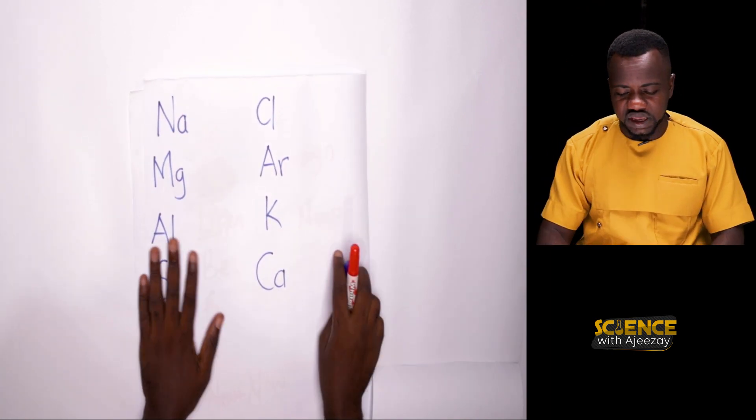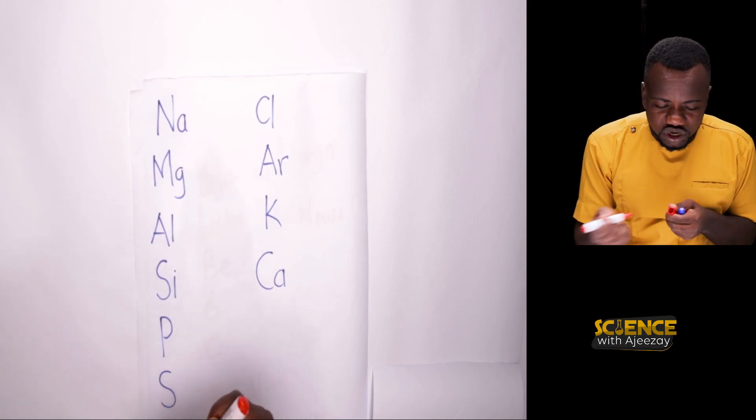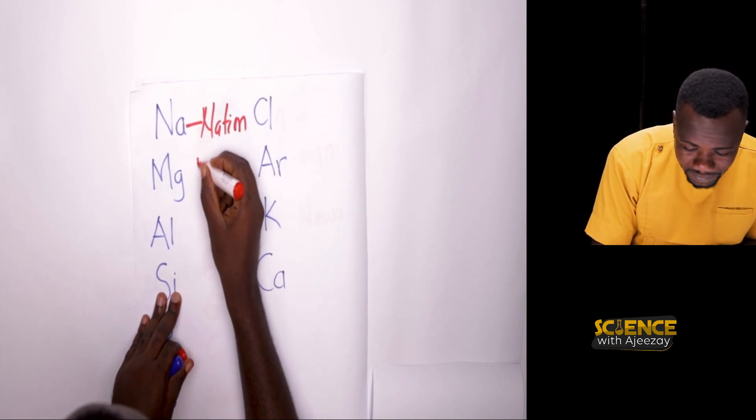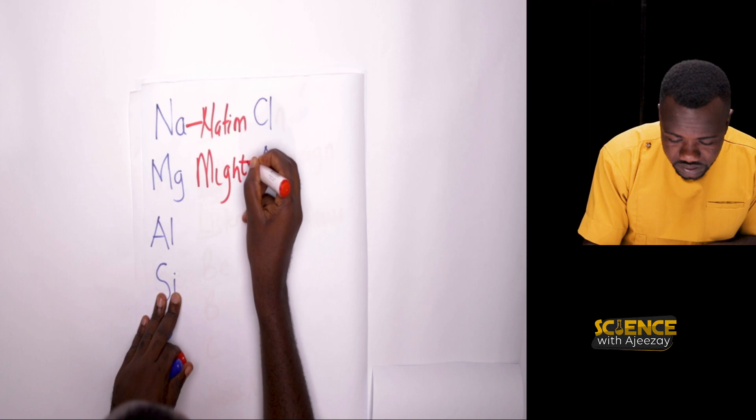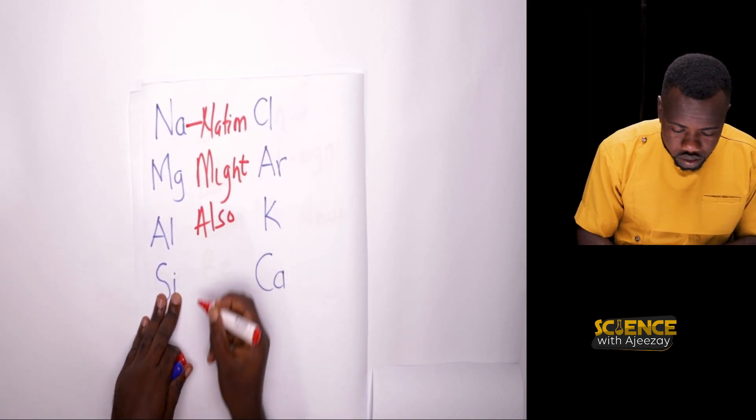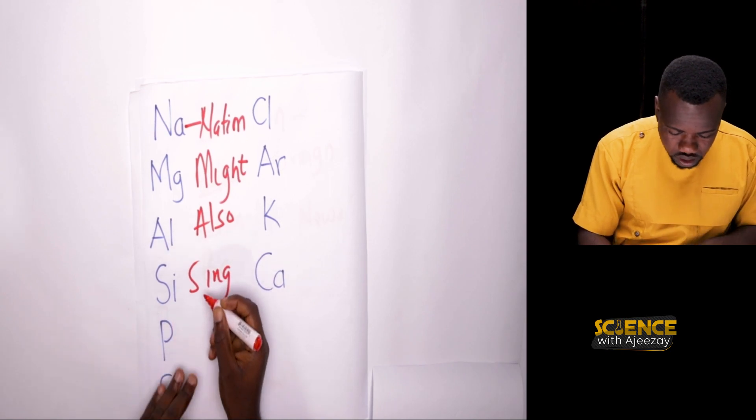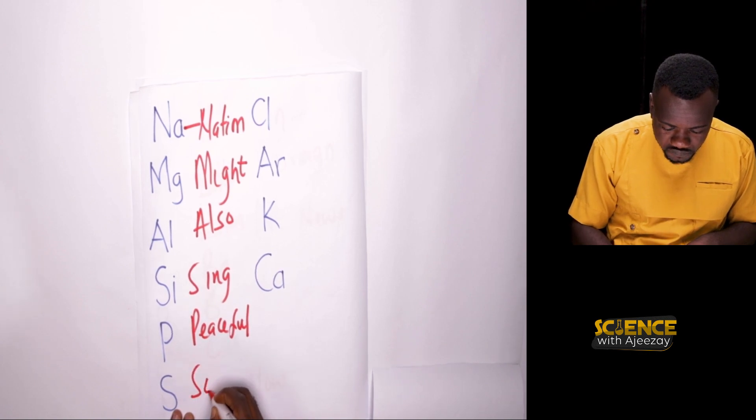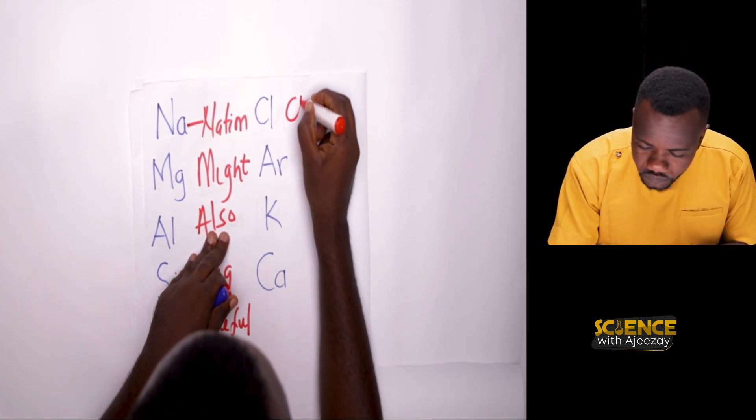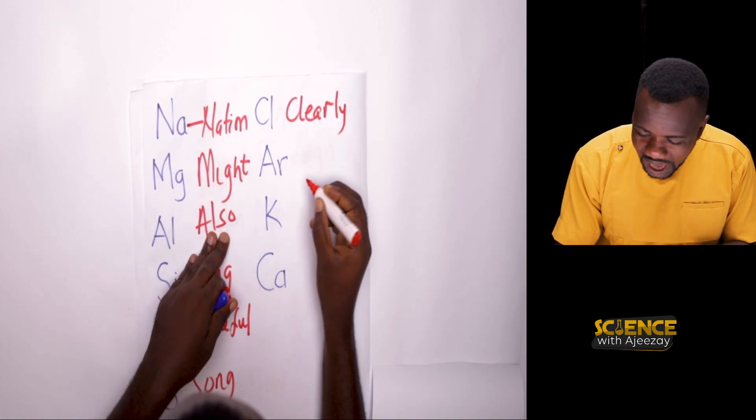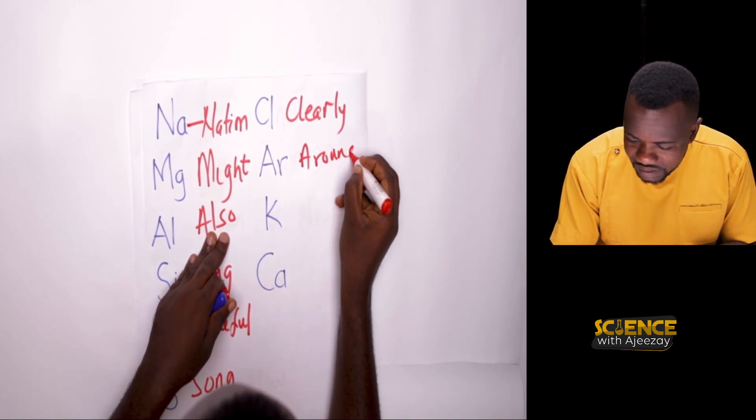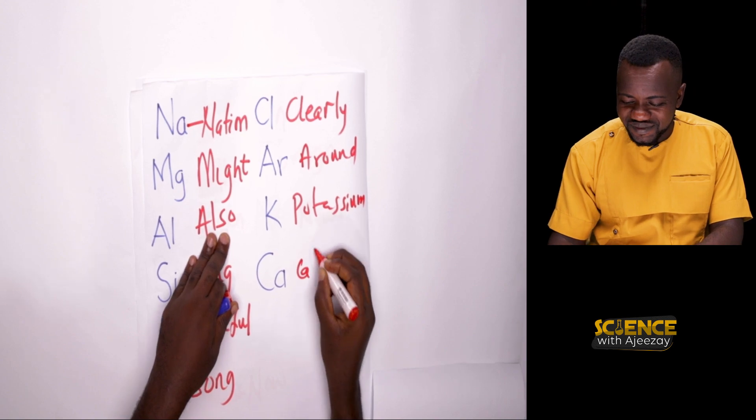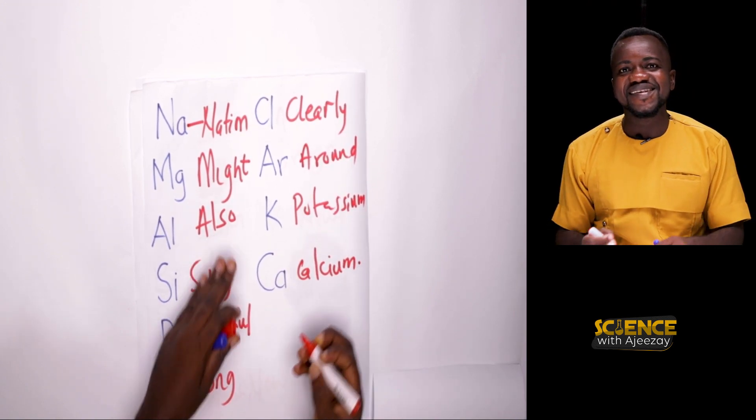The next ten elements to make it 20. We have sodium: Nations. Magnesium: Might. Aluminum: Also. Silicon: Sing. Phosphorus: Peaceful. Sulfur: Songs. Chlorine: Clearly. Argon: Around. Potassium and calcium. Isn't this interesting?